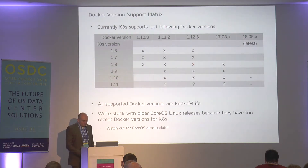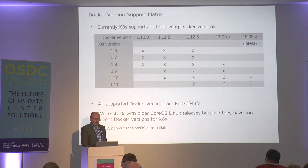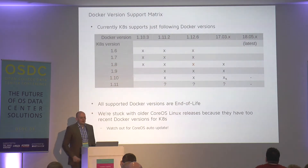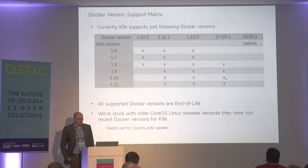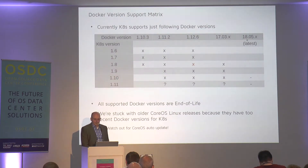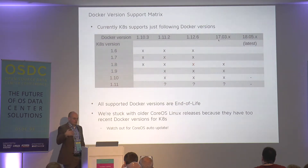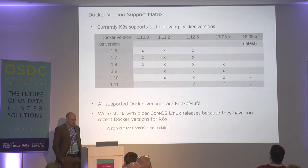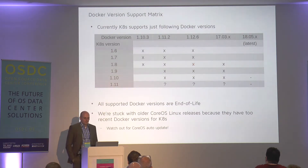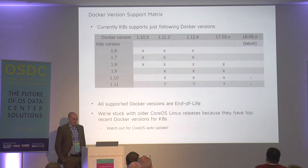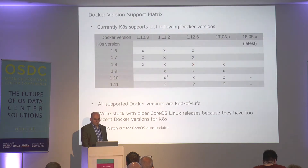For example, the latest Docker version is 18.05 or something, and Kubernetes 1.10 can only run a Docker version from last year. We were already heavy users of Docker for a really long time, and there were some features we used that we could not use because Docker support in K8s was lagging behind. Fun fact: the Docker versions Kubernetes supports are already end-of-life. This also transitions to the CoreOS release issue — later CoreOS releases bring more recent Docker versions, but we cannot migrate to them because Kubernetes is not supporting them.